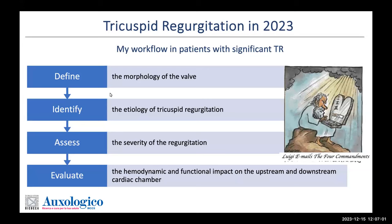When thinking about how to organize this lecture, I decided to go just as we approach patients with tricuspid regurgitation when they enter the echo lab. During my presentation, I will go through the workflow that starts with defining the morphology of the valve, identifying the etiology of the tricuspid regurgitation, assessing and grading the severity of the regurgitation, and finally evaluating the hemodynamic and functional impact on the upstream and downstream cardiac chambers — namely the right ventricle and the right atrium.